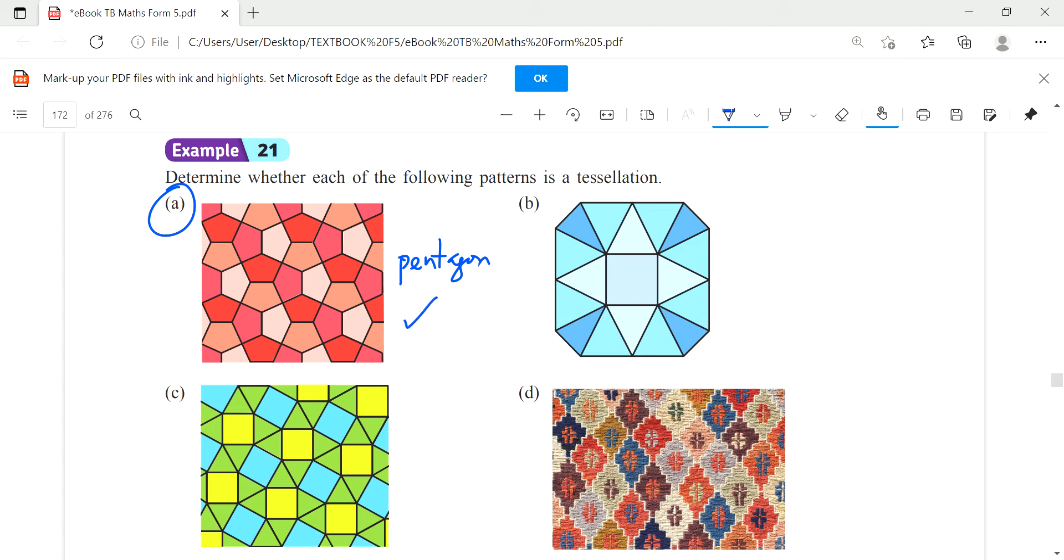What about B? How many shapes? One triangle and it's recurring, same pattern. But you have here one square but it's not recurring, so this is not a tessellation.